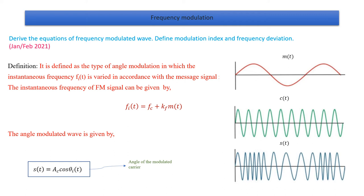In this video, we will see the basic definition of frequency modulation and its corresponding derivation. One important question asked in university is: derive the equation of the frequency modulated wave, define modulation index and frequency deviation, which was asked in the January/February 2021 question paper. Frequency modulation is when the frequency of the carrier signal is varied with respect to the message signal.